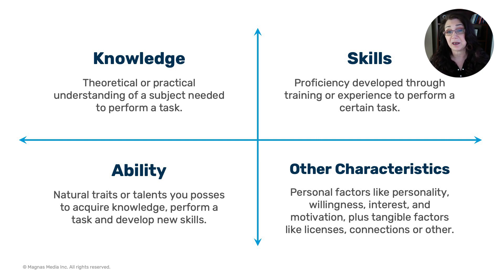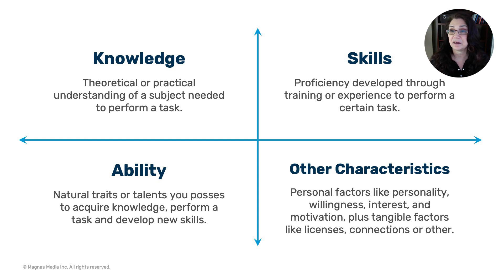There are some abilities where no matter how much you practice, some things you just cannot control. So try to identify if your project requires a specific ability so you can fill in that gap. Other characteristics could be personal factors like personality, willingness, interest, motivation, or something more tangible — like someone having a license you don't have, or connections that help you fill in that gap. Identify all four areas and find out if you have the right team; if not, can you fill in the gap?